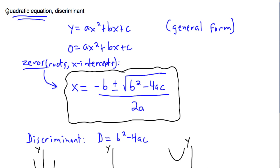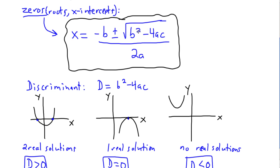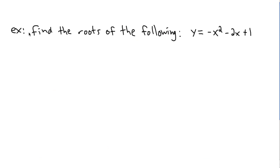In the last video we were looking at how to solve quadratics, and one way that always works is to use the quadratic formula. We looked at the general form of a quadratic and what's normally called the quadratic equation — it tells you the zeros, roots, or x-intercepts. We also looked at the discriminant and what different values of it mean. Now I want to give you a practical example.